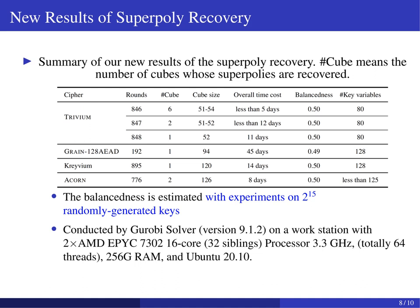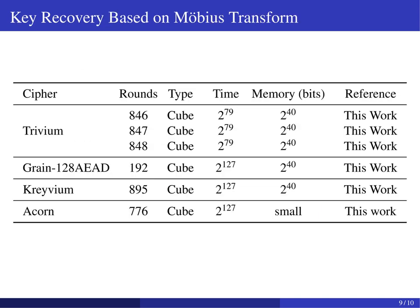As a result, we not only verified the previous results at a much lower time cost, but also recovered new superpolys for more rounds of several stream ciphers. Finally, by enhancing the key recovery method based on the Mobius transform, we will also show how to extract 1-bit information of the key bits from a massive superpoly containing approximately 2^30.5 terms.